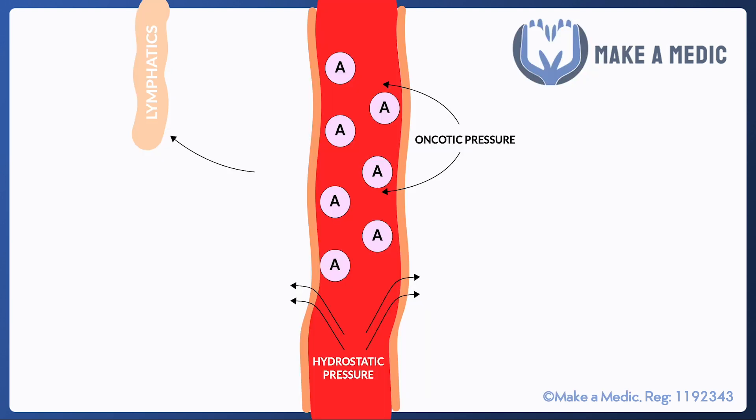I'm going to talk briefly about the fluid balance issues in patients with chronic liver disease. This diagram shows the various forces at play under normal conditions. Within a capillary there is a little bit of hydrostatic pressure which pushes fluid into the interstitium, and then there are two places the fluid can go. Quite a lot of it will return back into the blood vessels because the albumin within the blood vessel exerts an oncotic pressure that tries to draw water back into the intravascular compartment.